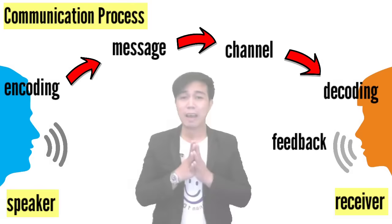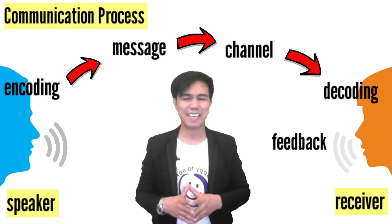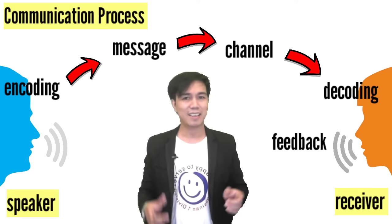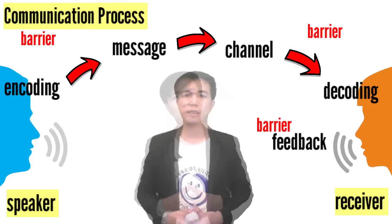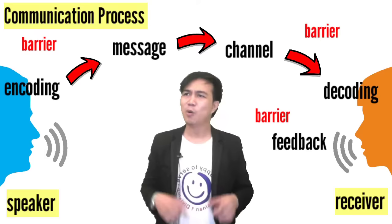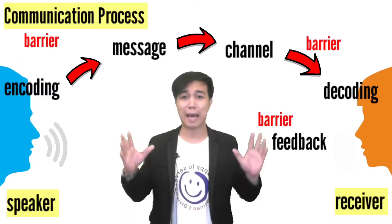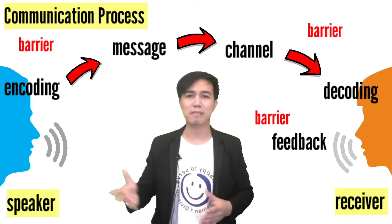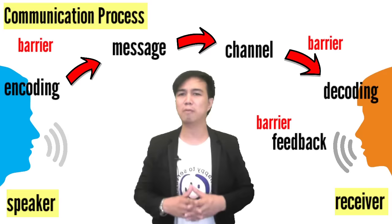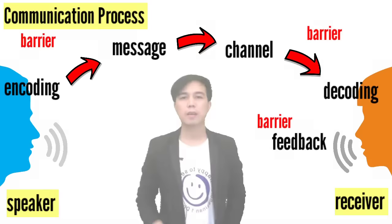Have you ever tried having a hard time just to cope with good communication? Yes, it happens. Sometimes misunderstanding happens because of the presence of noise, and this noise is also known as barrier. Barriers are factors that affect the flow of communication. We have two types of barriers — it could be external or internal. When we say external, these are barriers that happen outside. It could be the sound of a dog barking, a sound from the people around us, or a sound coming from a vehicle — anything that distracts the flow of communication. We call them external barriers.